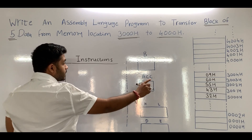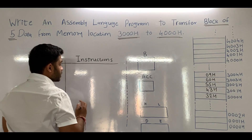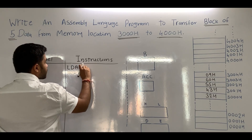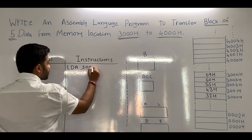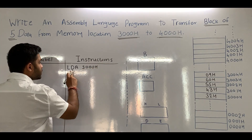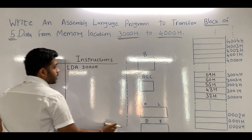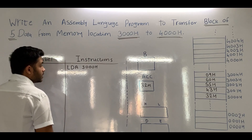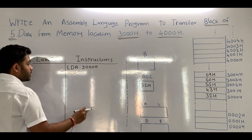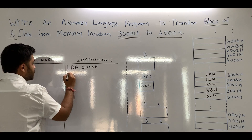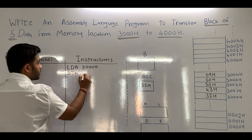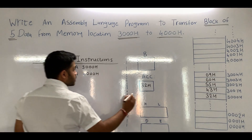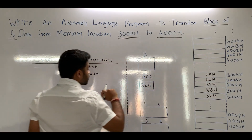First of all, we have to transfer data from 3000H to 4000H. We will use the instruction LDA 3000H. When we write LDA 3000H, the data stored in 3000H will be transferred to the accumulator — so in the accumulator there will be the data 32H. After that, we have to move this data to 4000H, so we will use the instruction STA 4000H, which means the data will be stored in 4000H.